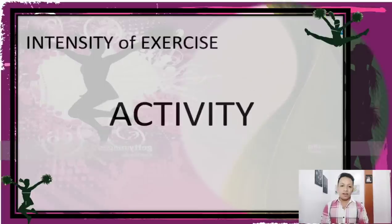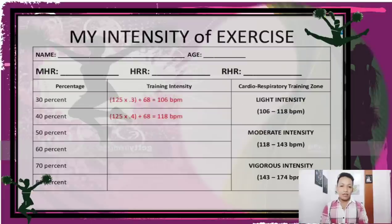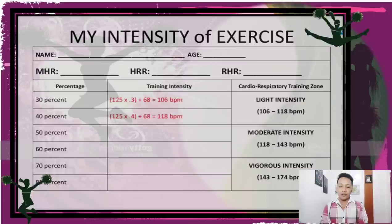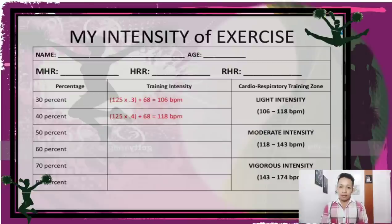There is also an activity for intensity of exercise entitled 'My Intensity of Exercise.' You need to indicate your name, age, MHR, HRR, and RHR. The activity includes columns for percentage, training intensity, and cardiorespiratory training zone. Examples are indicated in red font, so follow that example when completing the activity.